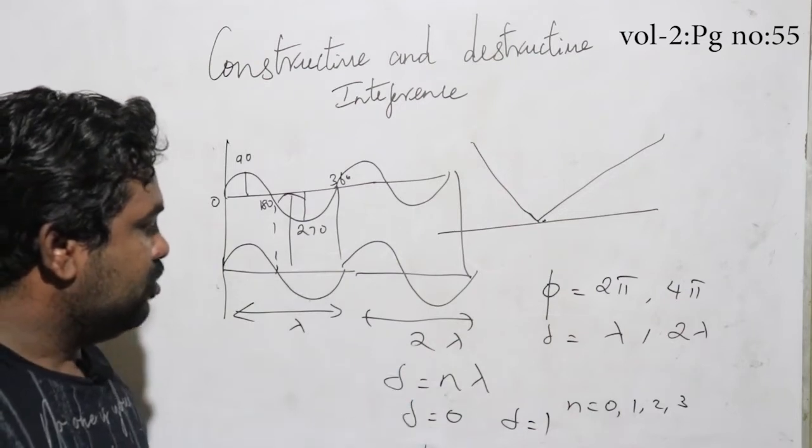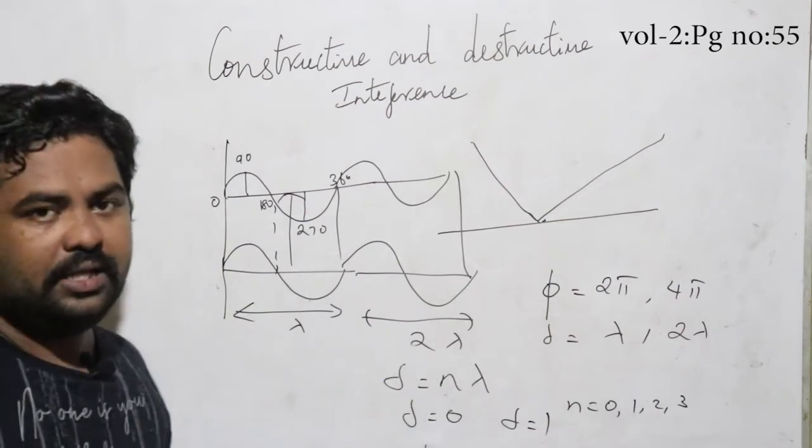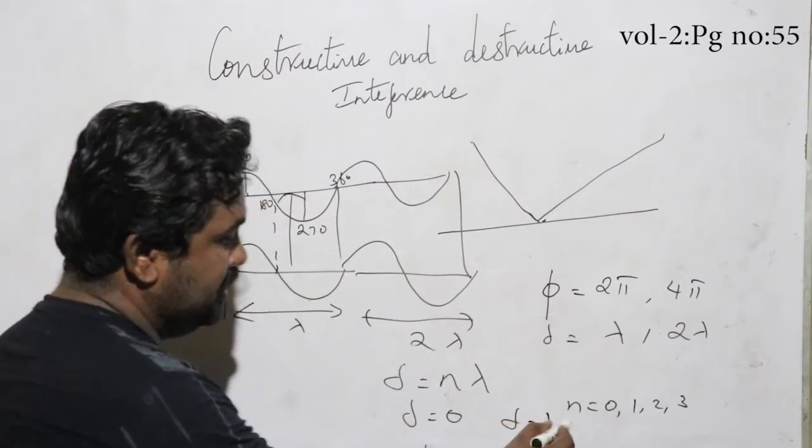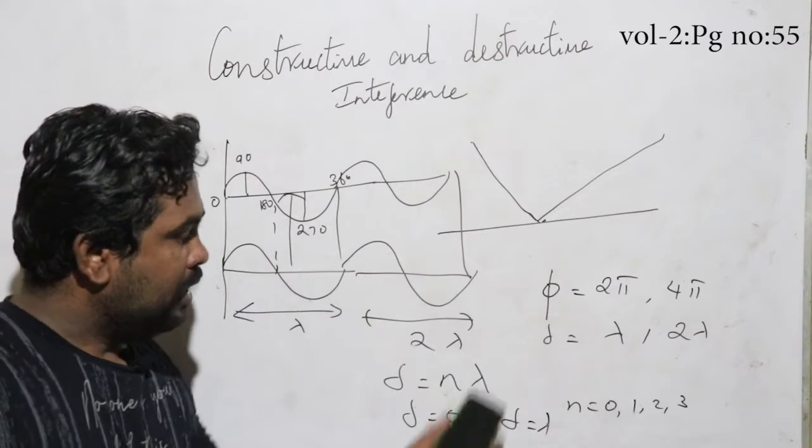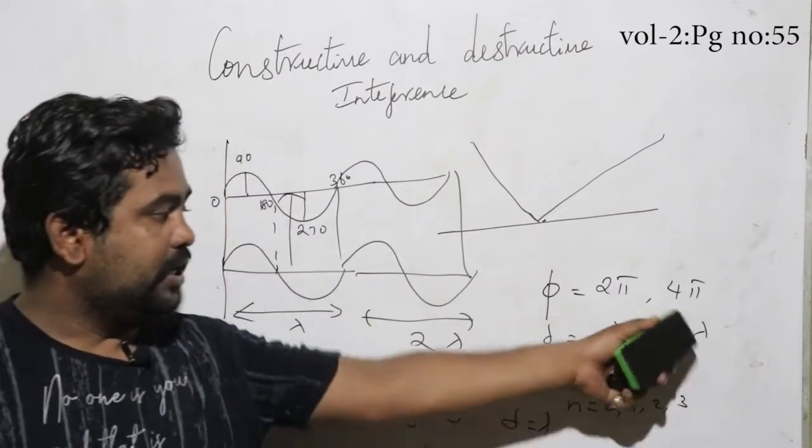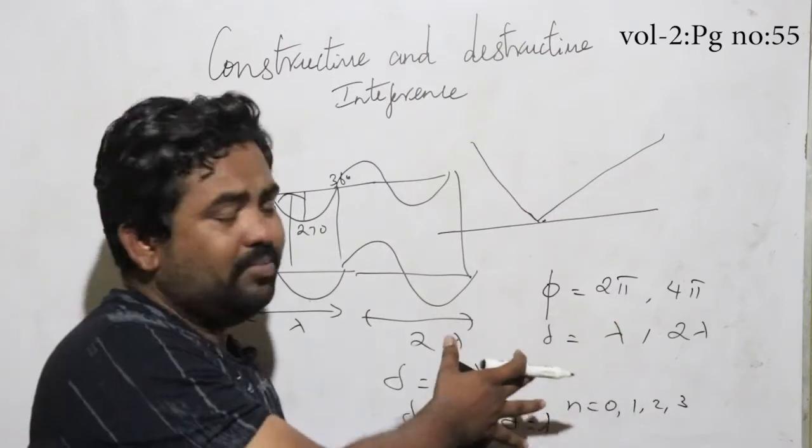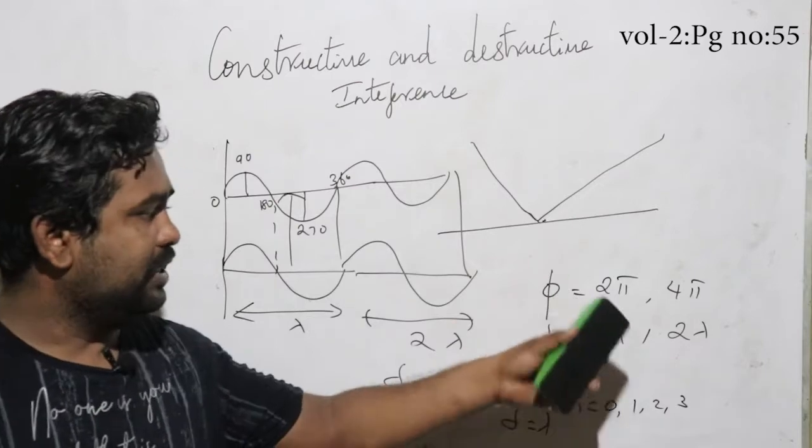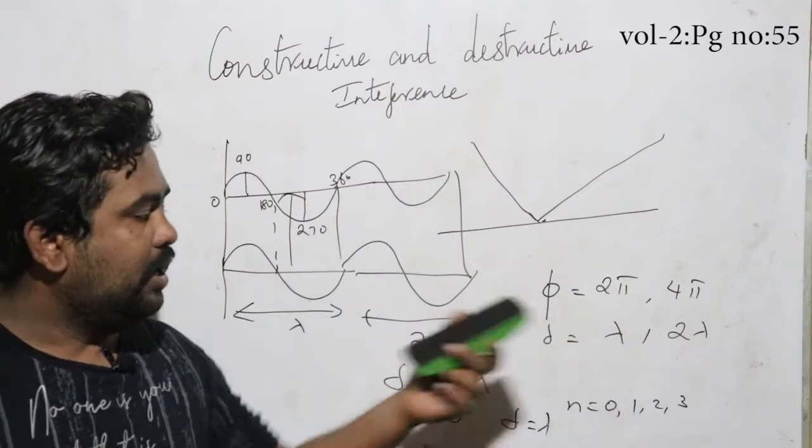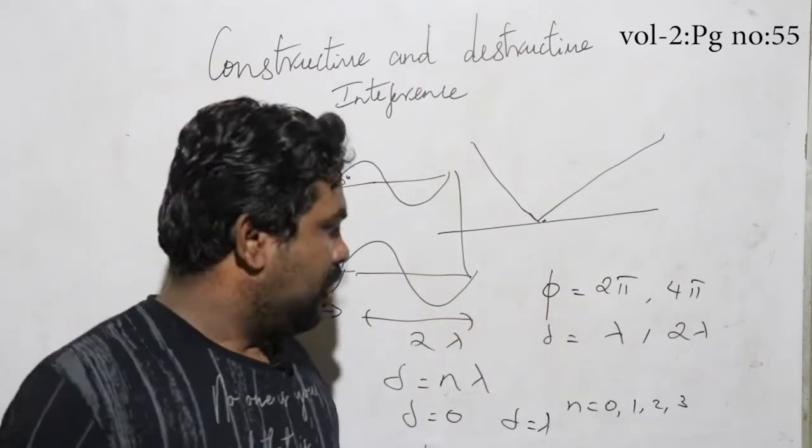For example, del is equal to 0. If n is equal to 1, del is equal to lambda. If n is equal to 2, you get 2 lambda. Here 2 lambda, 2 lambda. So here are the integral multiples of lambda. If you get 2π or 1 wavelength, you get lambda. Again, 4π is equal to 2 lambda. Then there are integral multiples of lambda.